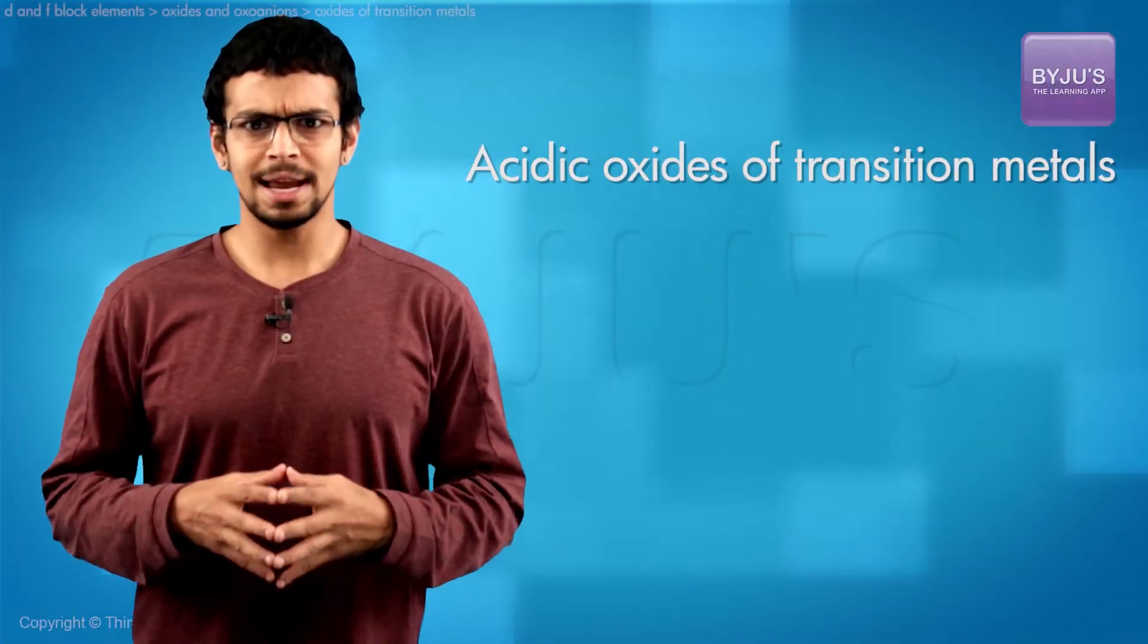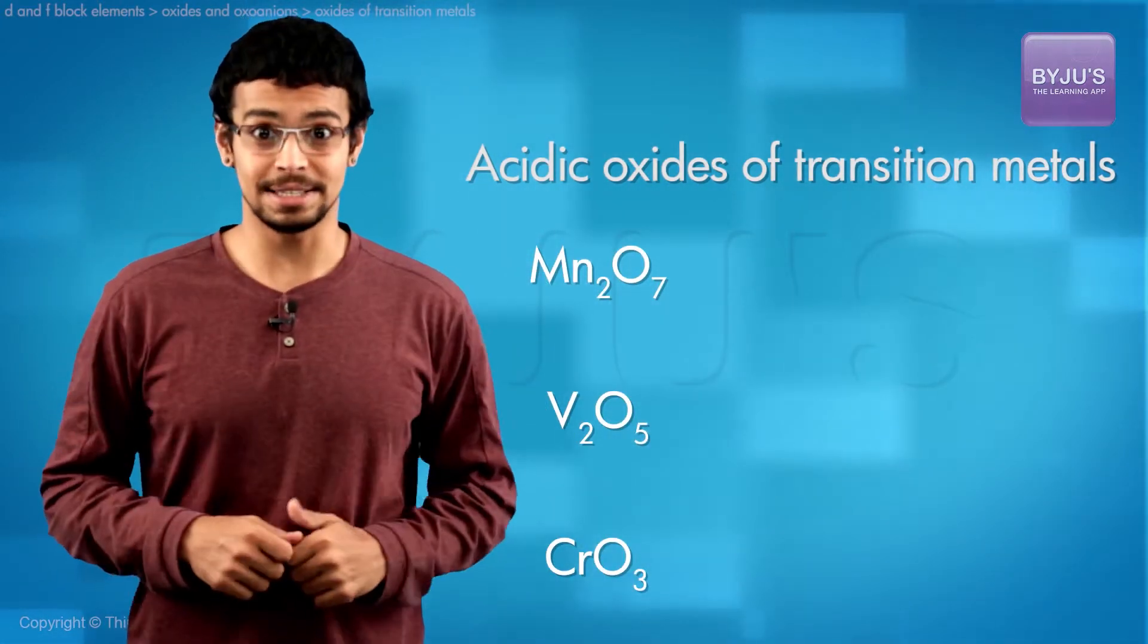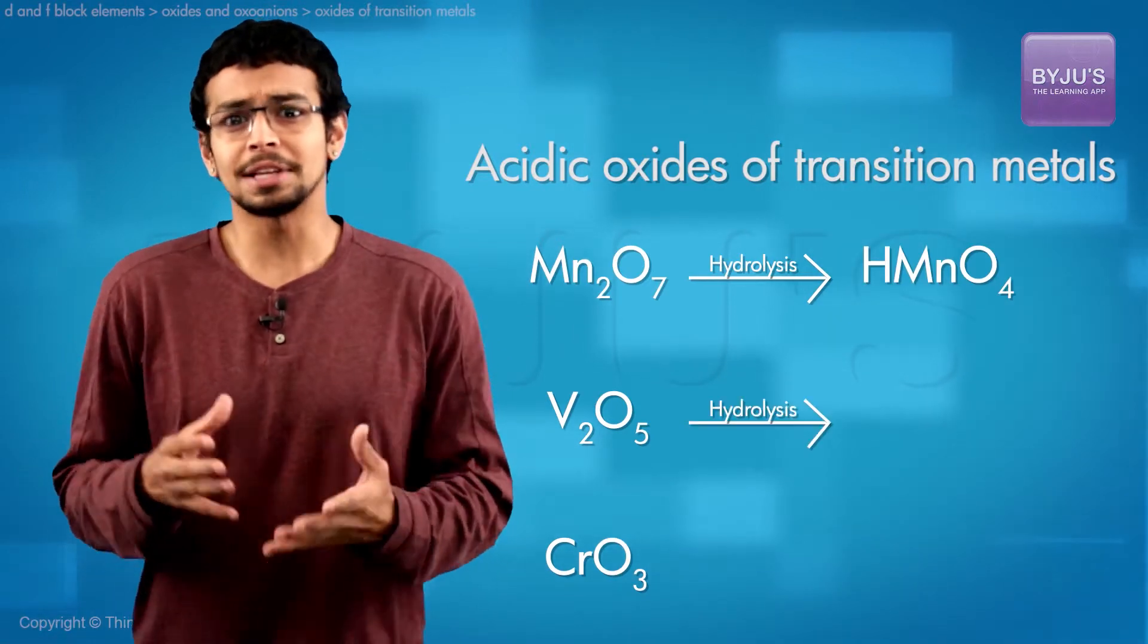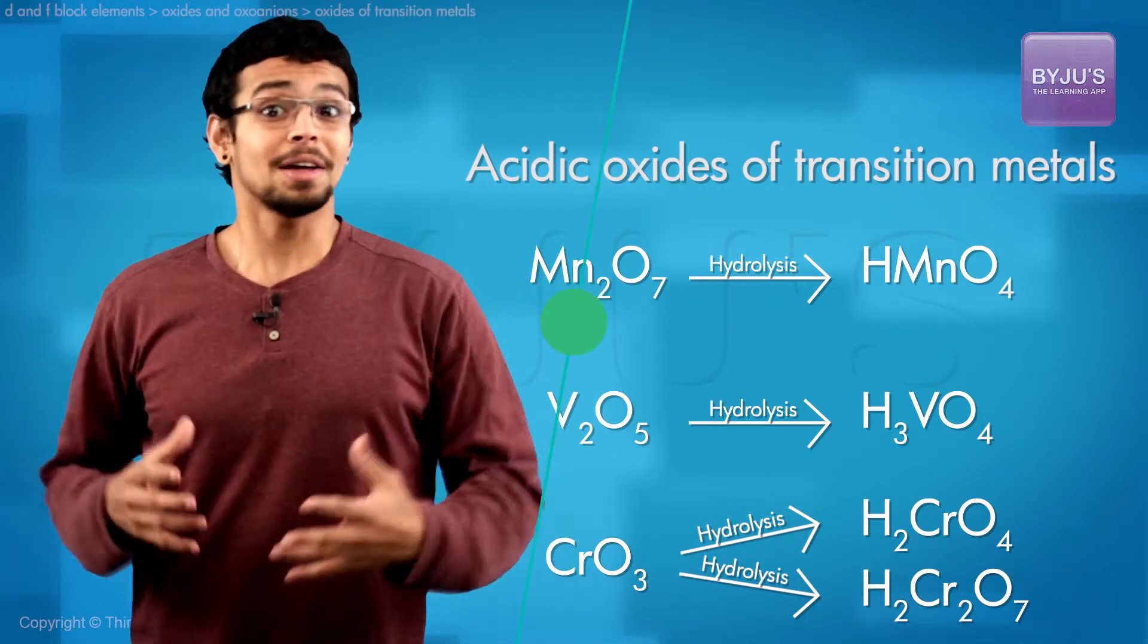Keep in mind that hydrolysis of acidic oxides gives metal hydroxy acids like HMnO4, H3VO4, H2CrO4, H2Cr2O7, and all of the others.